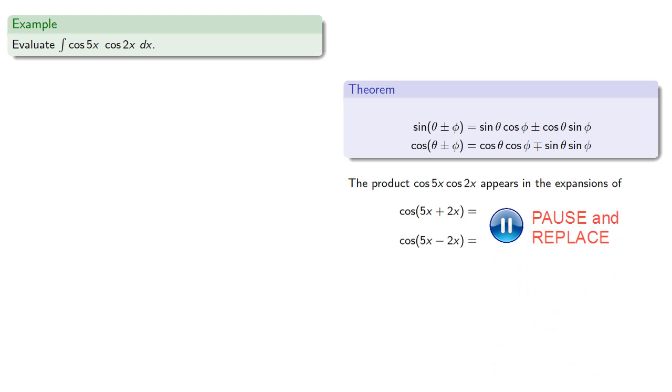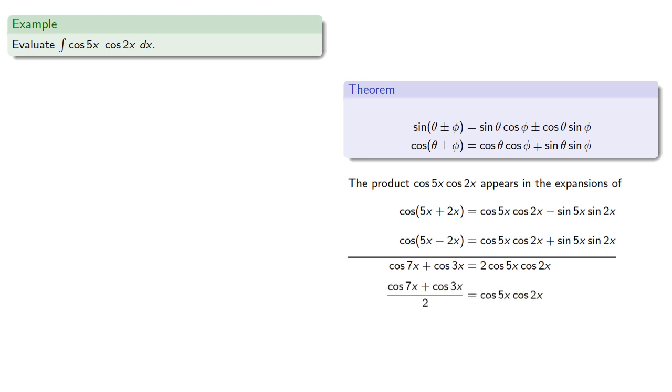Expanding. And this time, if we add them, we'll eliminate the sin 5x sin 2x terms. And we can solve for cos 5x cos 2x. We can remove that factor of 1/2 and integrate.